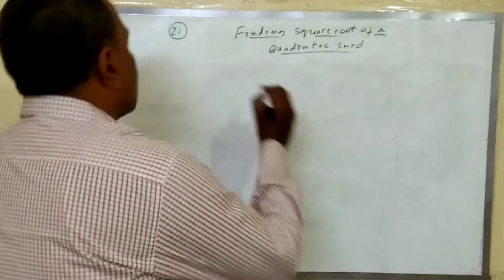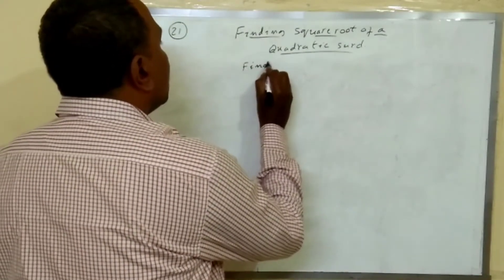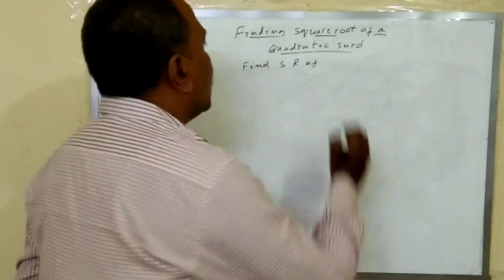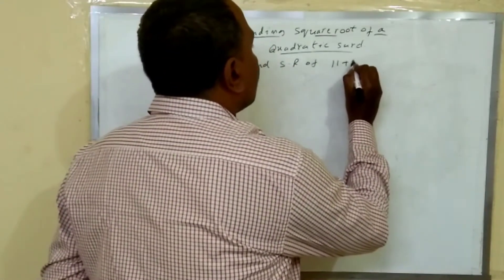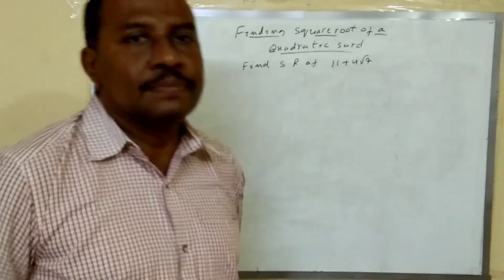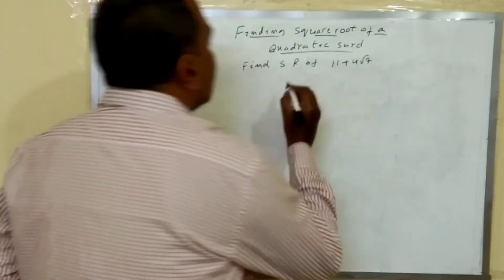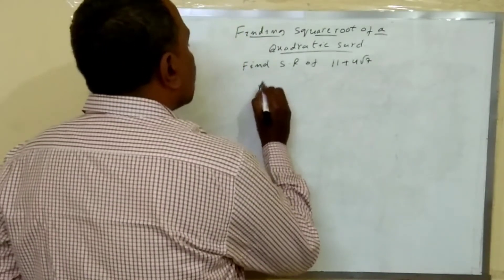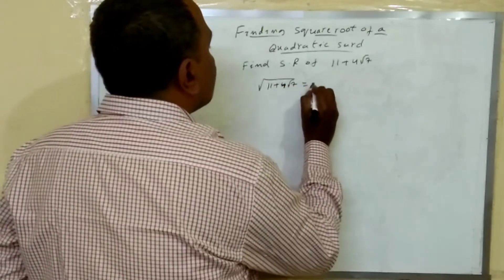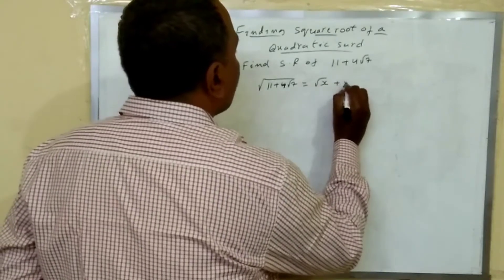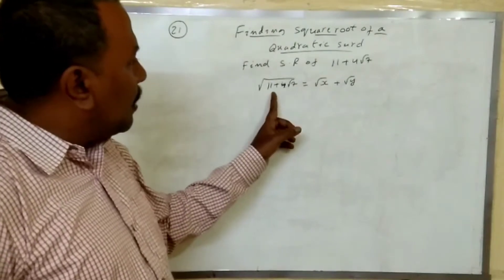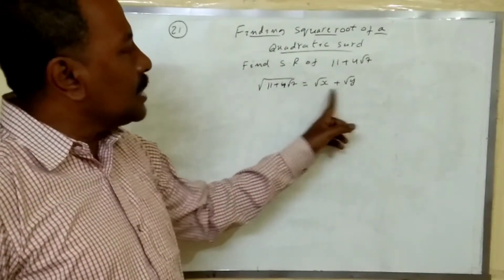We will take one example: find the square root of 11 plus 4 root 7. You are asked to find the square root of 11 plus 4 root 7. So, we assume it is equal to root x plus root y. Let us assume that square root of 11 plus 4 root 7 is equal to root x plus root y.